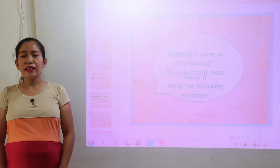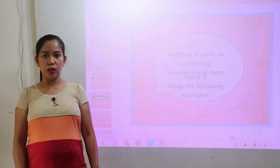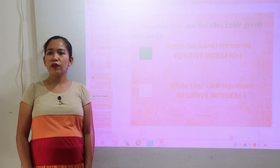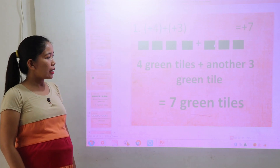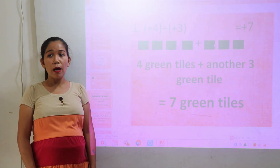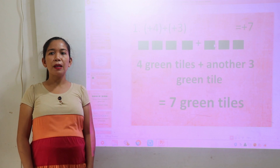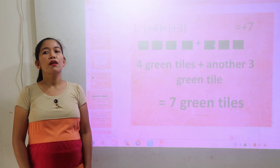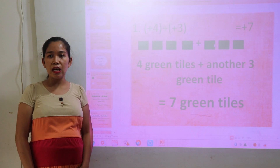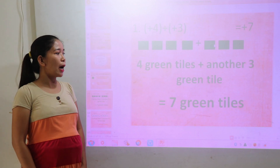Okay, class. Addition is the same as combining. And to understand more about this addition of integers, shown below are the tiles — color green and white tiles. Green tiles represent positive integers and white tiles represent negative integers. So, here is an example: positive 4 plus positive 3. The answer is positive 7 because they have the same color, which is green tiles. So, positive 4 plus positive 3 is equal to positive 7.